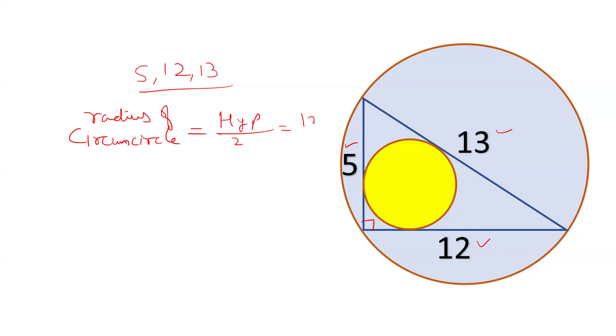So in this case, it is 13 by 2, so the radius will be 6.5. This is capital R. So capital R is 6.5, which is the radius of the circumcircle.